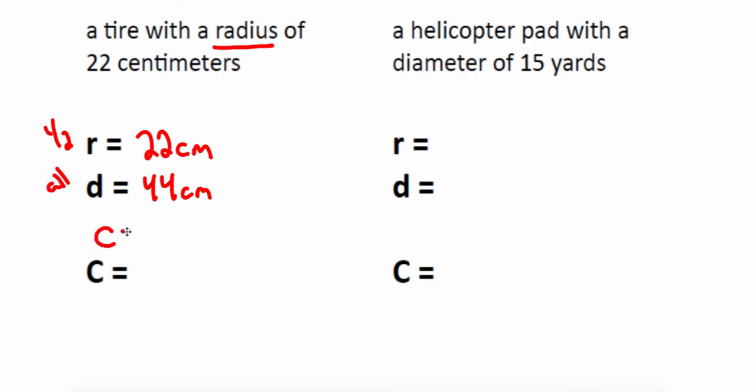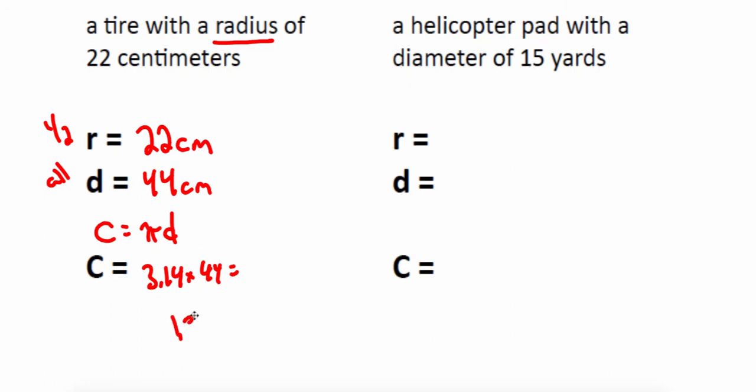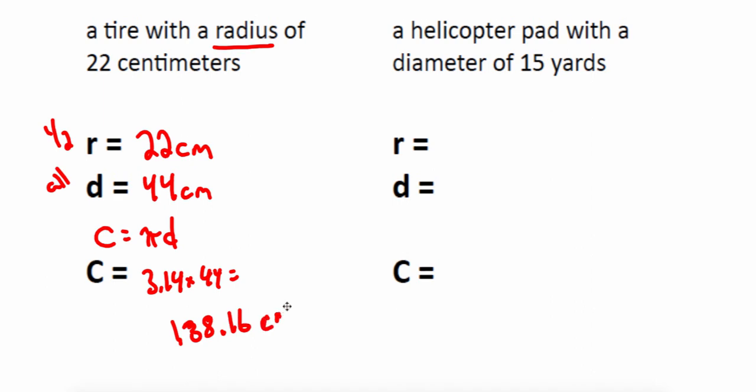To find the circumference, we do pi times the diameter. So I'm going to do pi, 3.14, times my diameter 44. That gives me 138.16 centimeters.